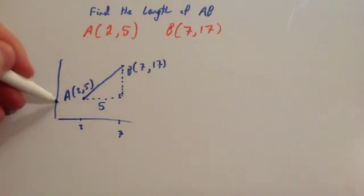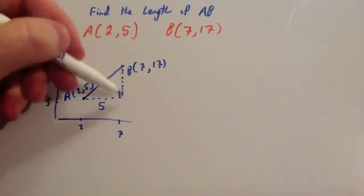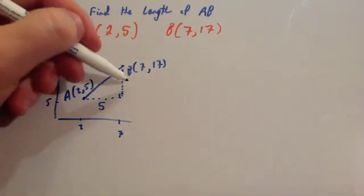This is 5 up, and this one is 17 up. So that means that the height of this triangle is then 12, if you take those away you get 12.